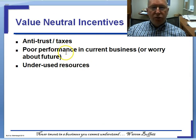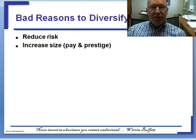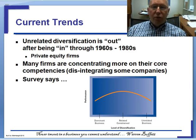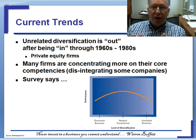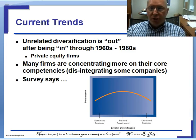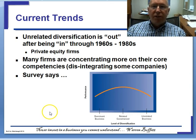I did not choose to put any questions on the exam about the value-neutral and the bad reasons to diversify. To wrap it up, we're seeing a trend toward companies going back to their basic business models — either dominant businesses or highly related diversification. Even though unrelated diversification is somewhat out, there are still plenty of firms practicing it. This is the recap of Chapter 6, and there will be 10 questions from each chapter on the exam.